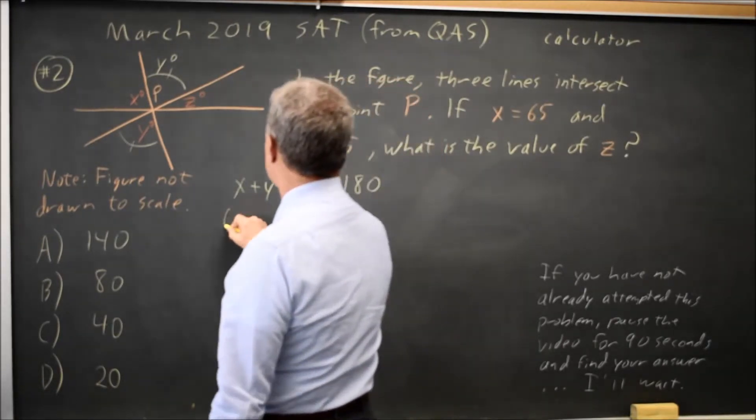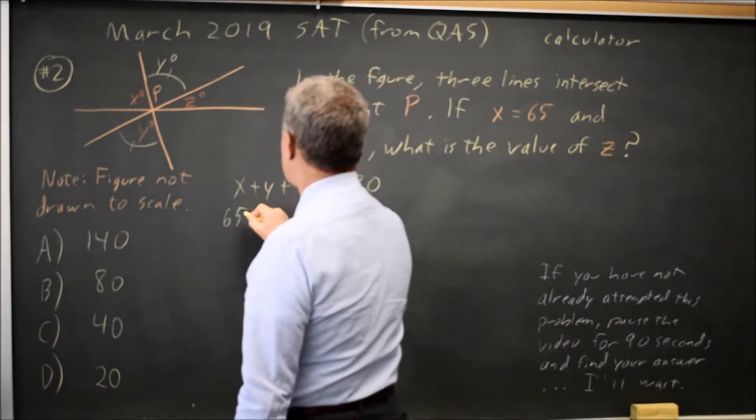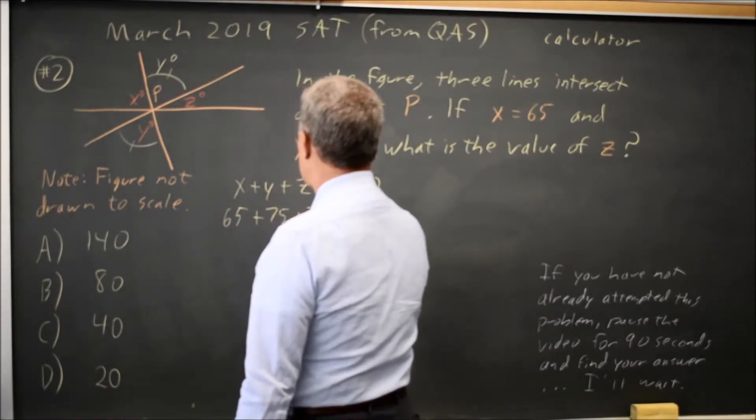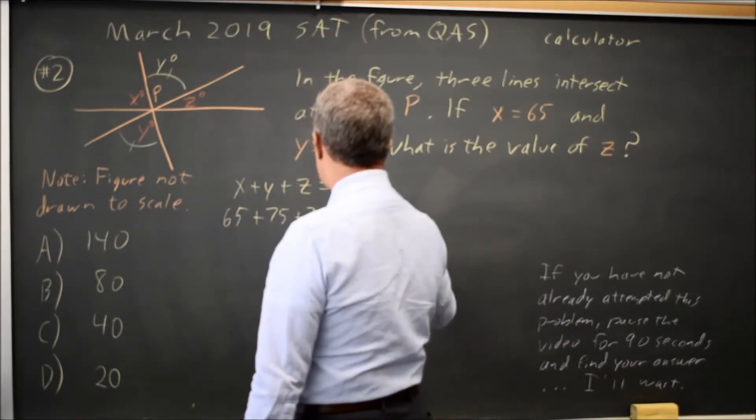We're given that X is 65. We're given that Y is 75. So 65 plus 75 plus Z equals 180.